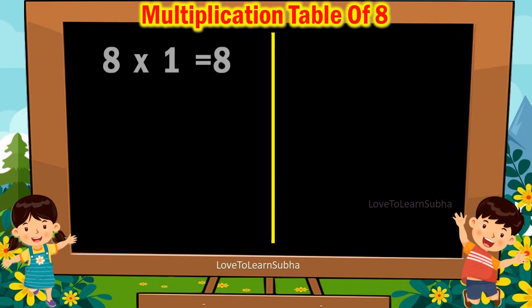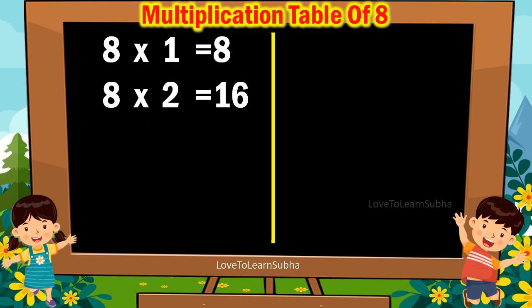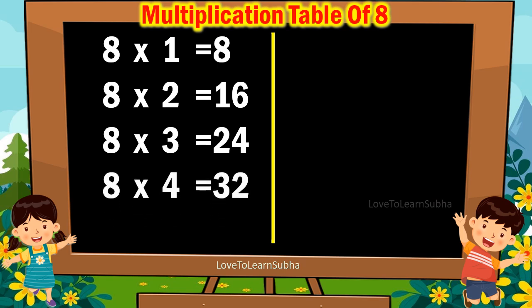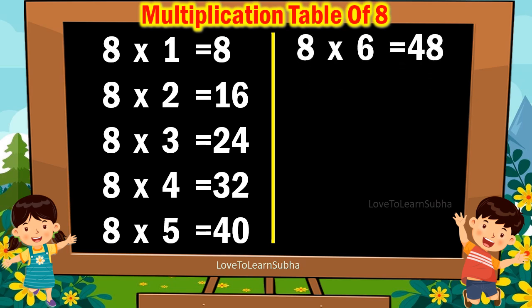Multiplication table of 8. 8 1s are 8. 8 2s are 16. 8 3s are 24. 8 4s are 32. 8 5s are 40. 8 6s are 48. 8 7s are 56.